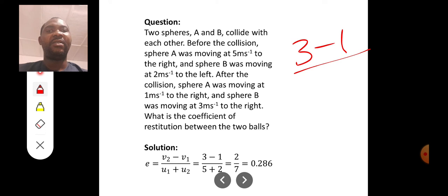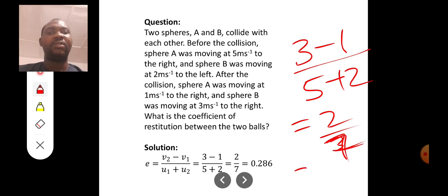Divided by, before they collided, they were moving in the opposite direction. Remember, it's always the larger number minus the smaller number. So this is 5 plus 2. So that will give us 2 over 7, and 2 over 7 is 0.286.